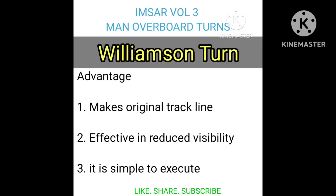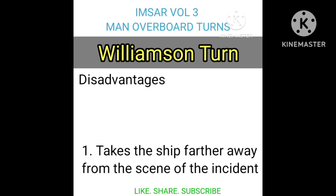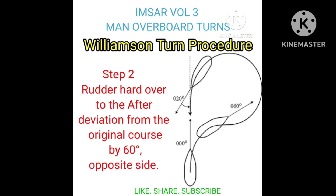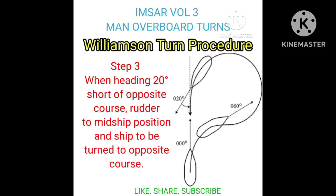Williamson Turn: Advantage – makes the original track line active in reduced visibility; it is simple to execute. Disadvantage – it takes the ship farther away from the scene of the incident. Williamson Turn Procedure: Step 1 – Rudder hard over, in an immediate action situation only to the side of the casualty. Step 2 – After deviation from the original course by 60 degrees, rudder hard over to the opposite side. Step 3 – When heading 20 degrees short of the opposite course, rudder to midship position and ship to be turned to the opposite course.